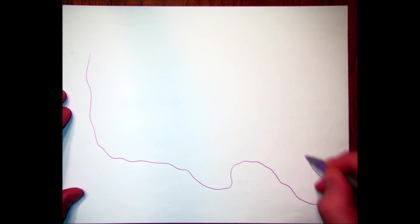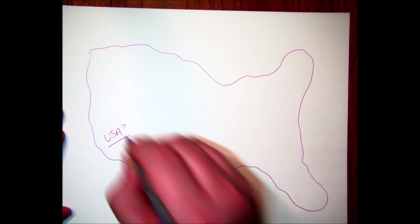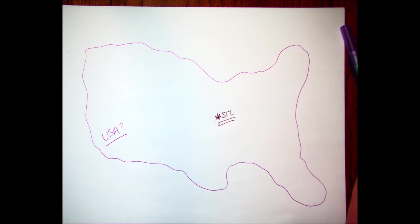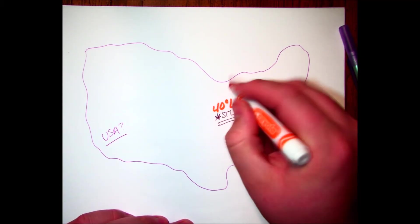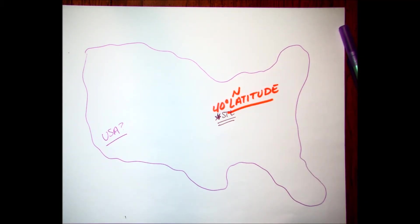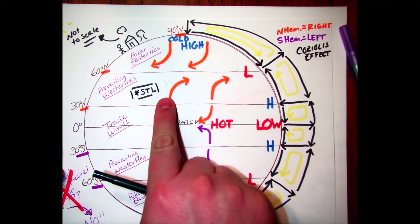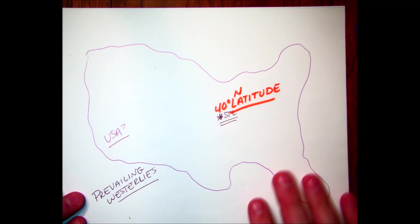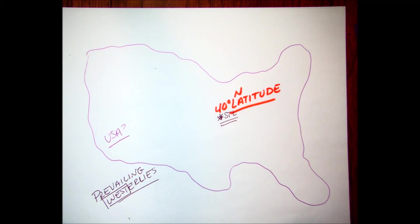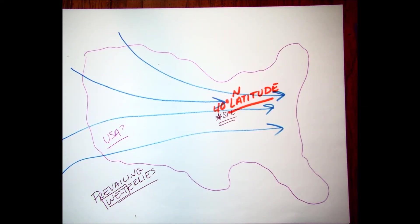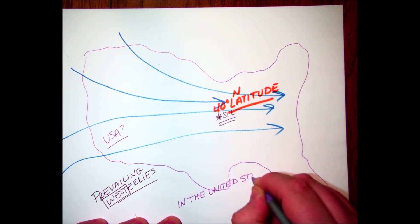Looking at St. Louis again — air travels from high to low pressure, and we live in the area of the prevailing westerlies. St. Louis is at about 40 degrees north latitude, so we're in between 30 north and 60 north. We get the prevailing westerlies coming from the west to the east. All of our global winds are going to be coming from the west to the east.